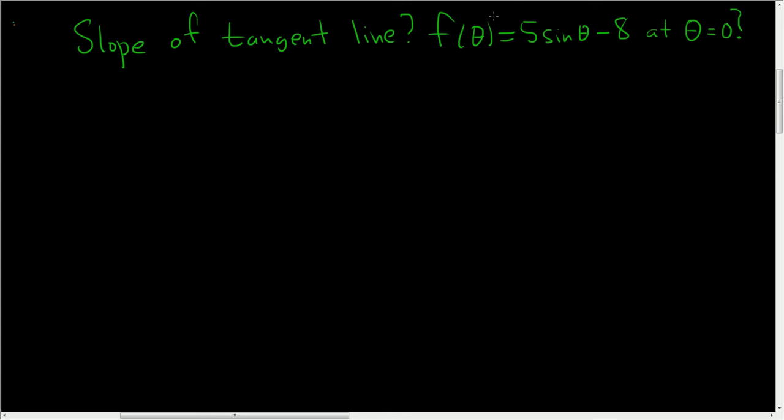We're asked to find the slope of the tangent line to the function f of theta equals 5 sine theta minus 8 at theta equals 0.